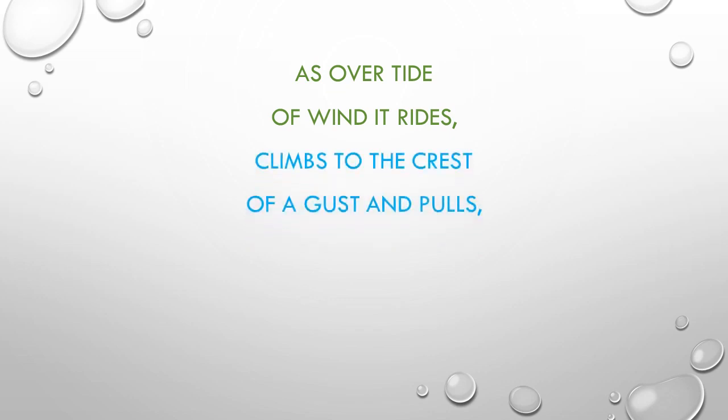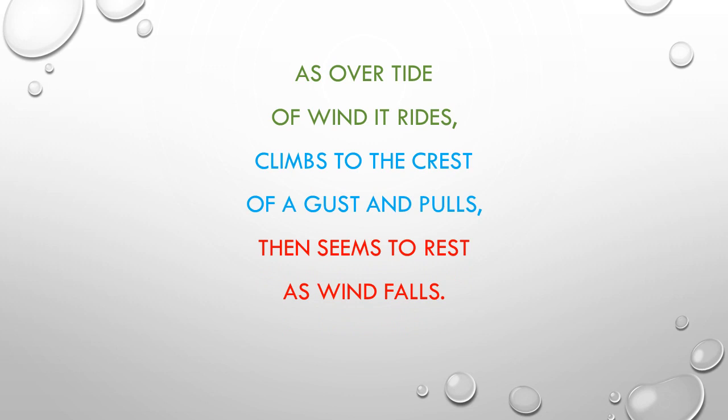Climbs to the crest of a gust and pulls. The kite climbs to the crest — crest means the highest point — of a gust. A gust is a sudden brief rush of wind. With a sudden brief rush of wind, the kite can go to the highest point of the sky, and pulls forward with the help of the string. Then seems to rest as wind falls — as soon as the wind stops, the kite appears to be taking rest in the sky, not moving.